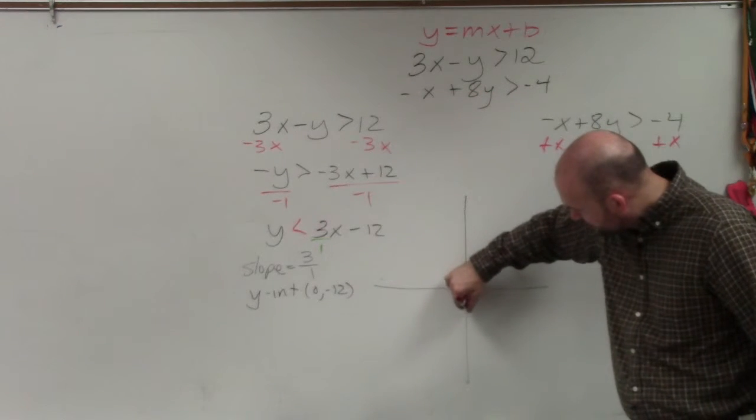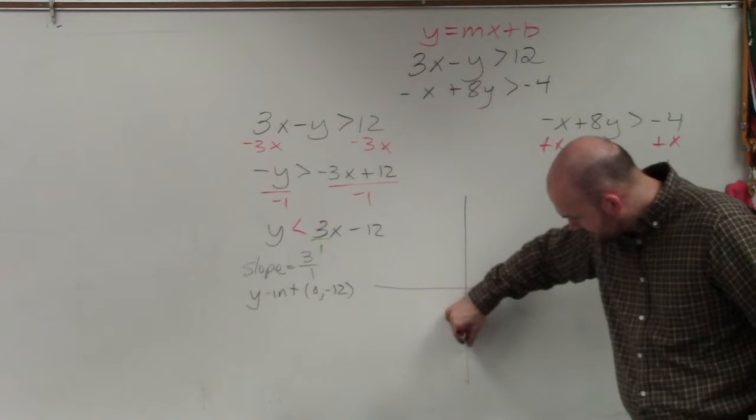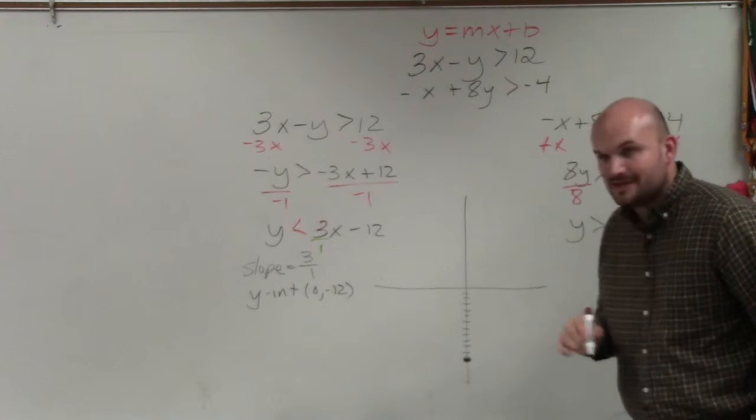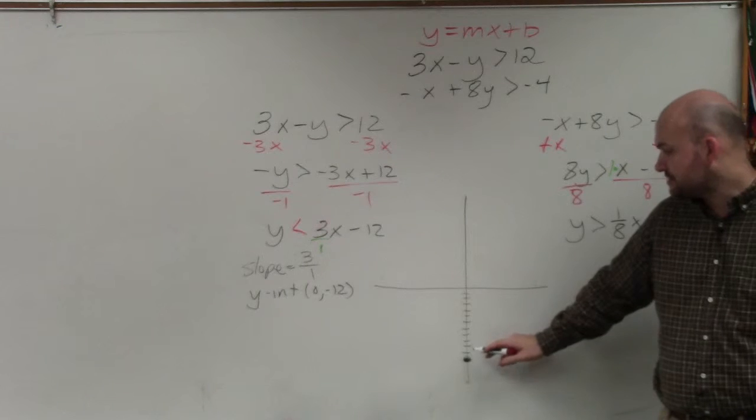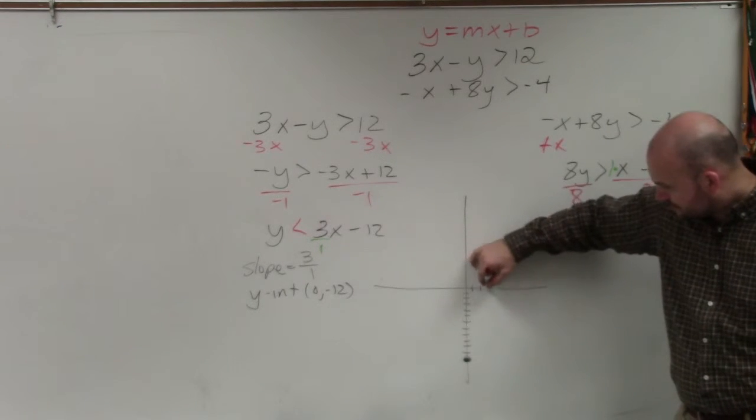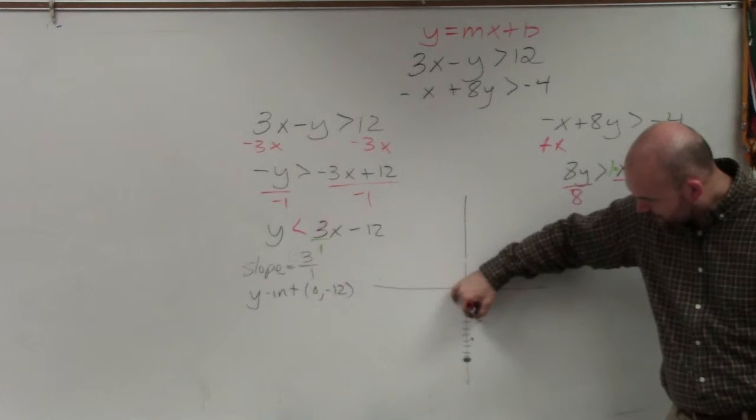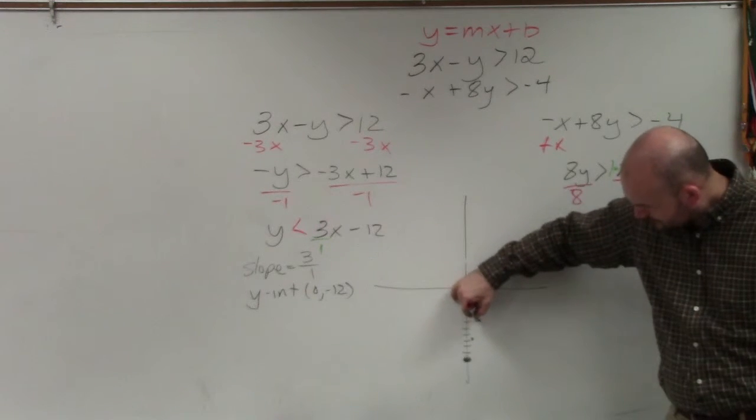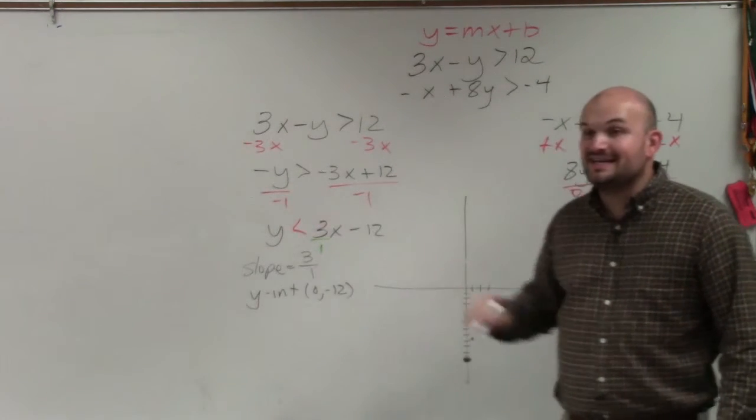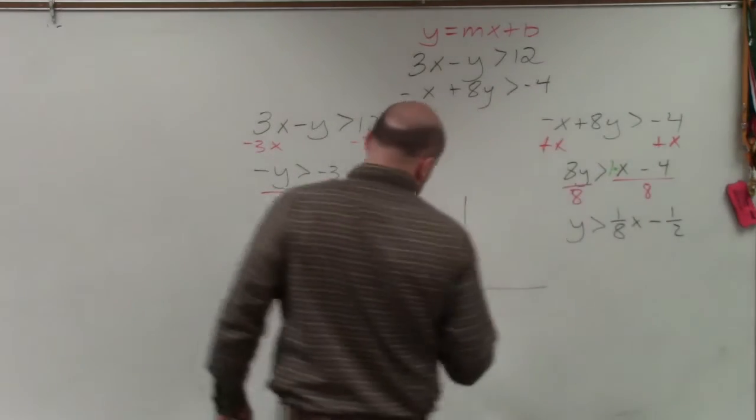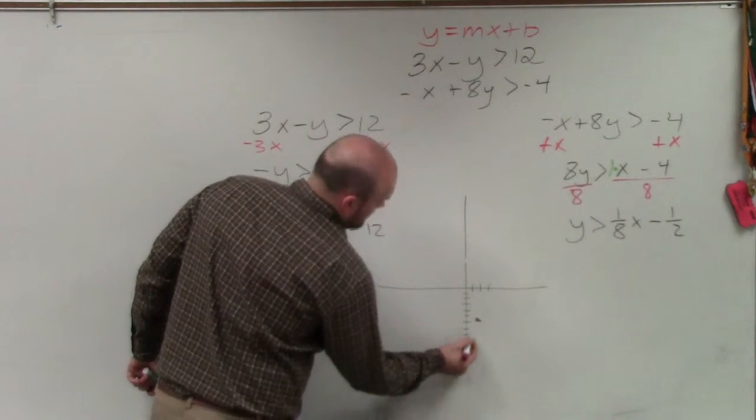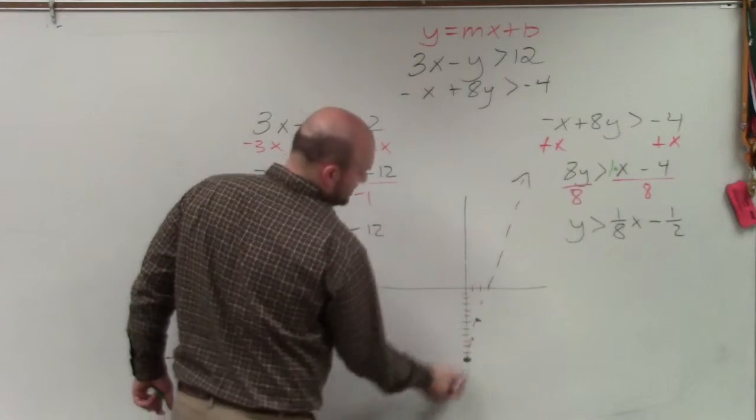And what it does is it reminds me I need to plot that point. So when I'm going to graph, I just go to 0, negative 12. 1, 2, 3, 4, 5, 6, 7, 8, 9, 10, 11, 12. And I make a nice big dot. That's my y-intercept. Then I follow the slope up 3, up 3, over 1, up 3, over 1. And since this is y is less than, that's going to be a dashed line.